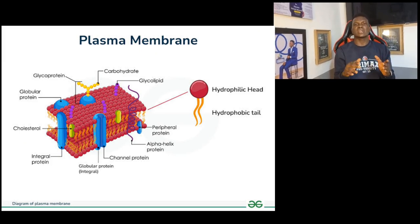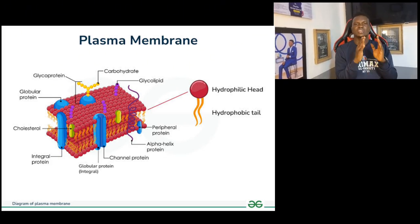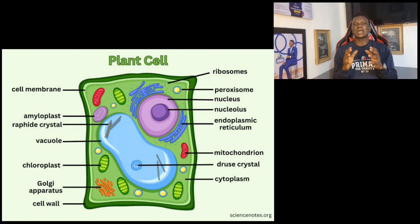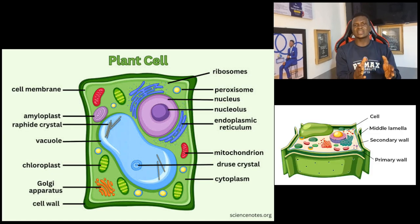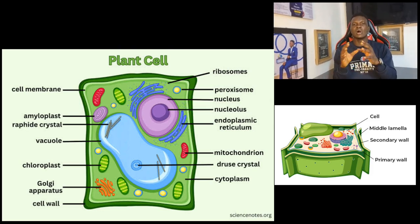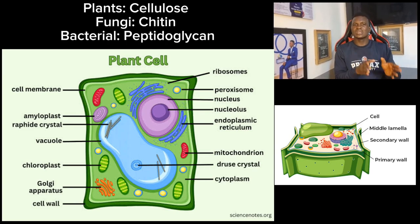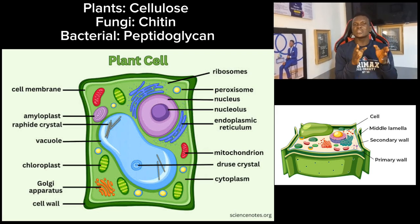Another structure found in plant cells and some other organisms is the cell wall. The cell wall gives rigidity and strength to plants and makes them stand firm. It is usually made up of cellulose, and consists of the primary cell wall, the middle lamella, and the secondary cell wall. Note: the cell wall in plants is made of cellulose, in fungi it is made of chitin, and in bacteria it is made of peptidoglycan.